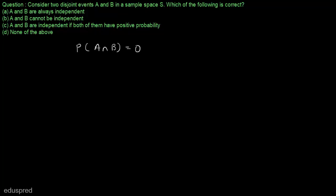Let's have a look at these parts one by one. In part A, it's written that A and B are always independent. For A and B to be independent, the probability of A multiplied by the probability of B should be equal to probability of A intersection B. And we know that probability of A intersection B is equal to 0, so this right hand side is equal to 0.